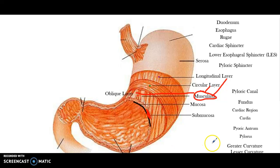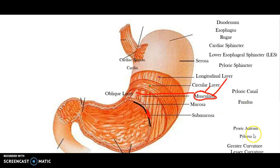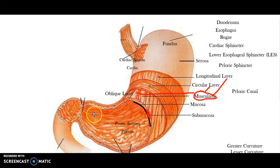Looking at other structures within the stomach, we can identify certain features. The upper portion of the stomach is called the cardia, located close to where the heart would be. This area is called the fundus. As we move into the body of the stomach, the area that starts to narrow is called the pyloric antrum. Once it really starts to narrow, it's referred to as the pyloric canal.